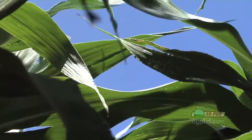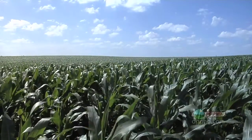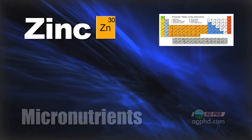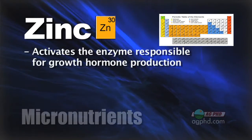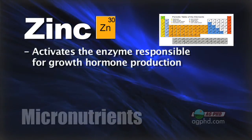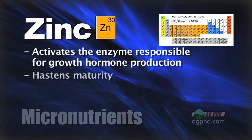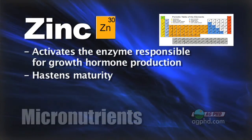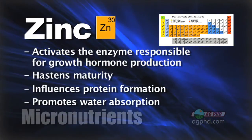With any of these micros, they can have a variety of different functions. Let's start with one of the most commonly talked about micronutrients in agriculture — that is zinc. What's the purpose of zinc in the plant? Zinc has a number of functions. One of the things that's pretty cool about zinc: it activates the enzyme responsible for growth hormone production. That's a real big one with your plant, especially throughout the growing season when it gets into those rapid growth stages. It does regulate growth, and it also hastens maturity. So if you're having some maturity issues, your corn's not getting there, perhaps it's because you're short in zinc. It also influences protein formation and promotes water absorption.